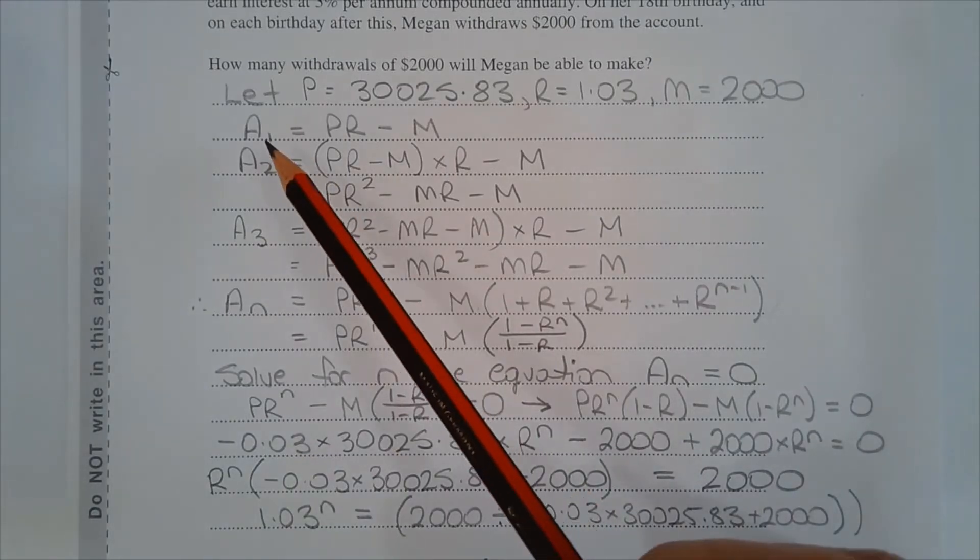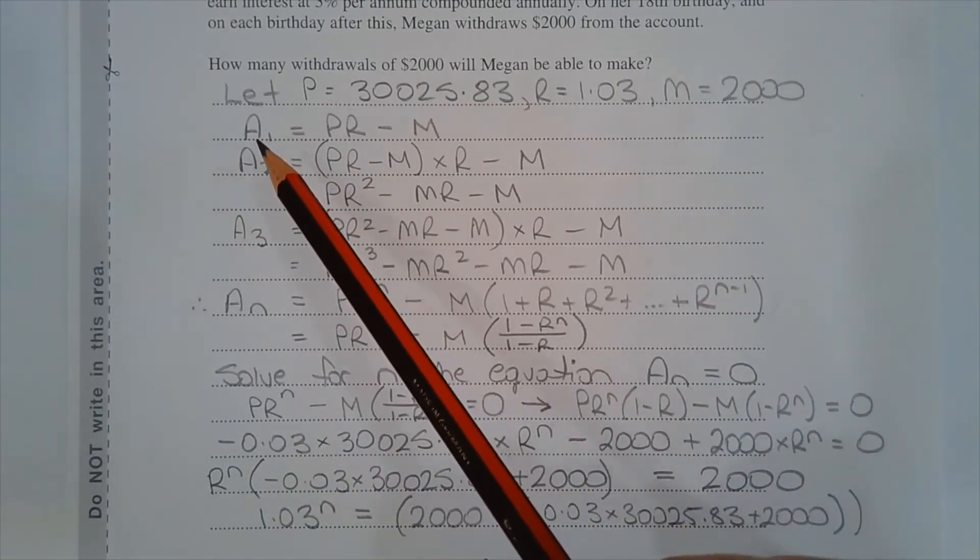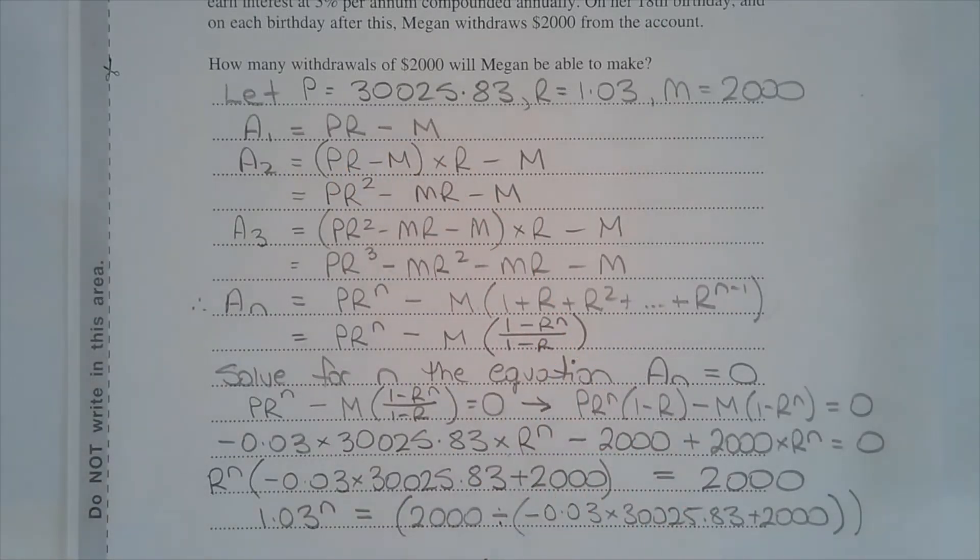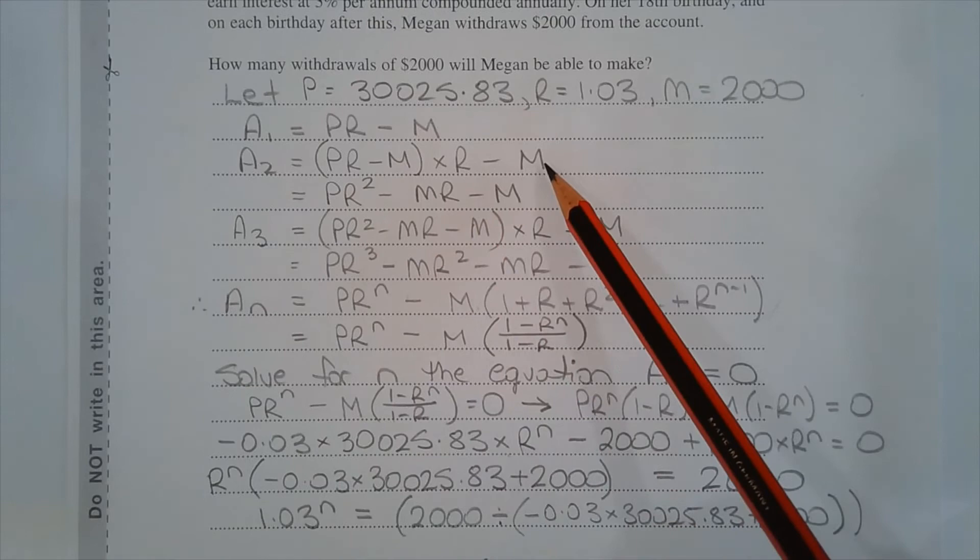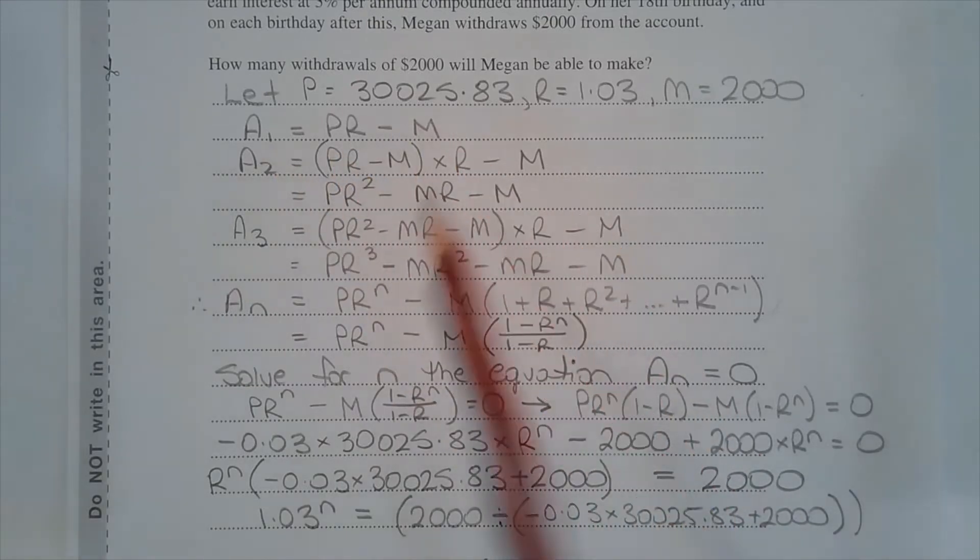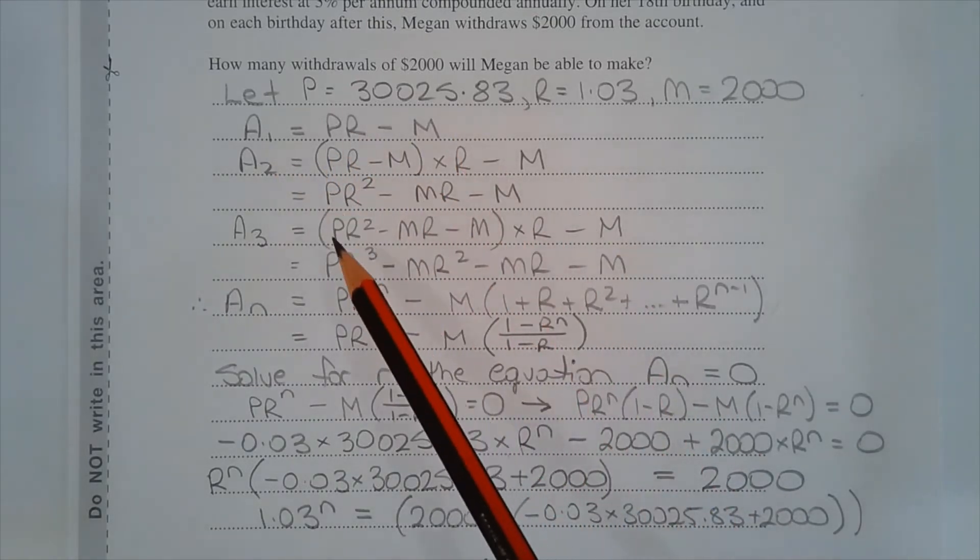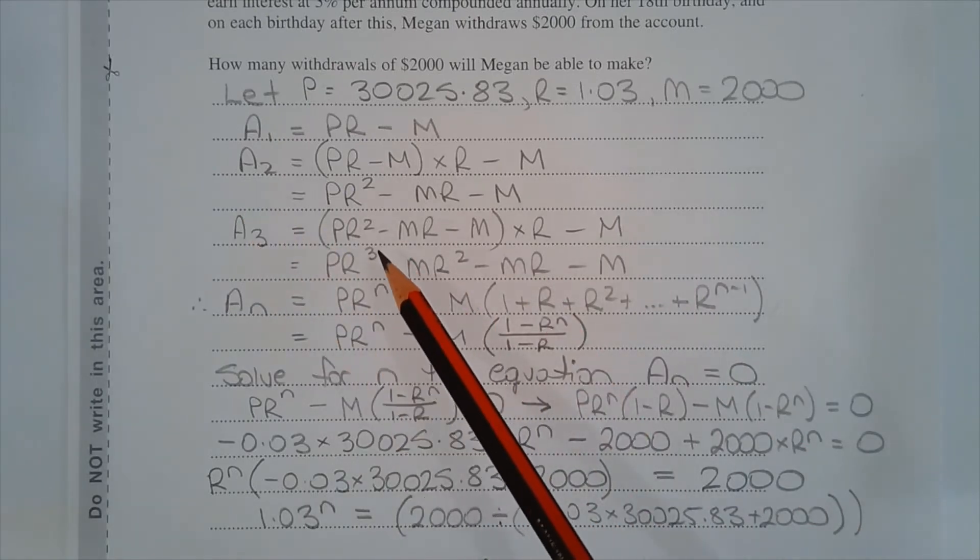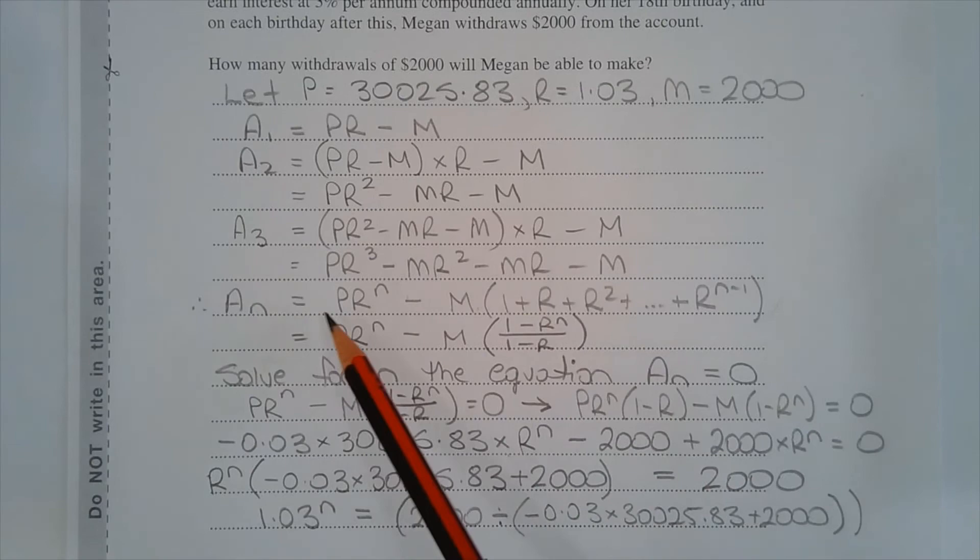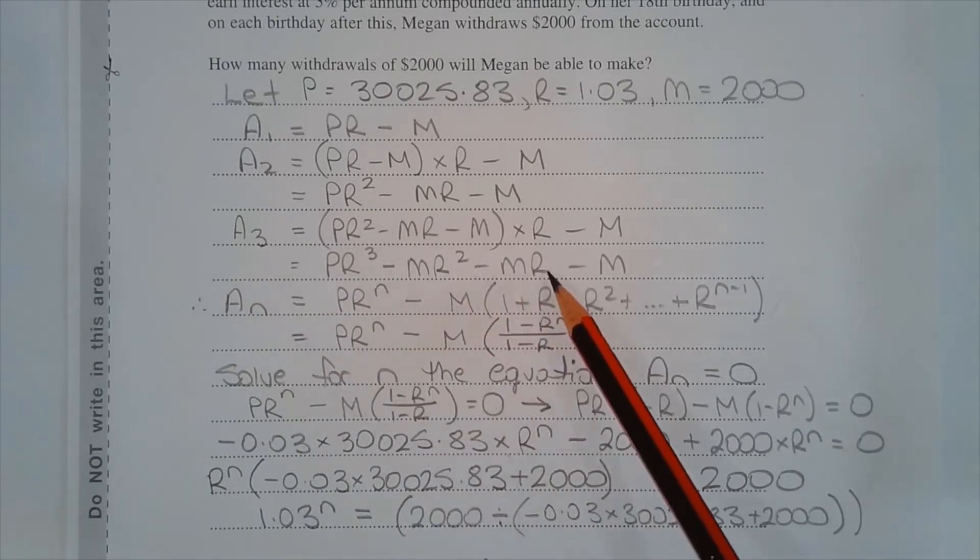Now A1 represents the amount of money in Megan's account after her first withdrawal of $2,000 and that equals PR minus M. A2 is equal to A1 multiplied by R minus M, where A1 is equal to PR minus M. Expanding the brackets, we have PR squared minus MR minus M. A3 is equal to A2 multiplied by R minus M, where A2 is equal to PR squared minus MR minus M. Expanding the brackets, we have PR cubed minus MR squared minus MR minus M.